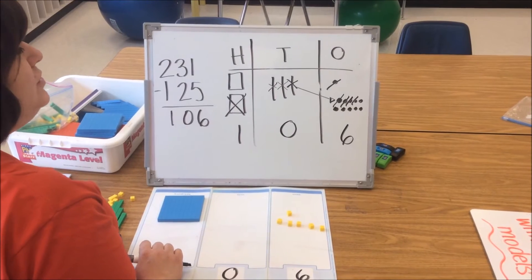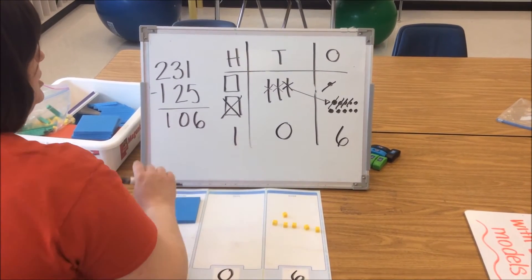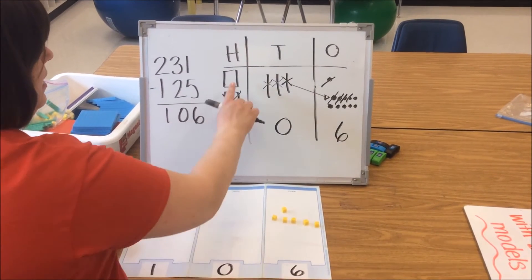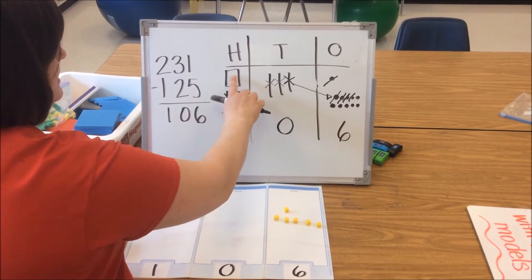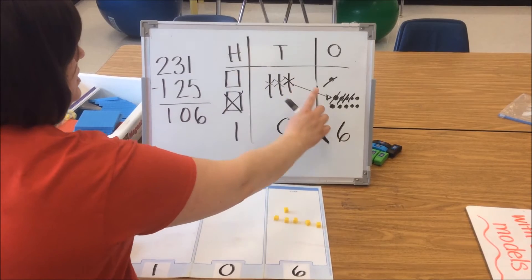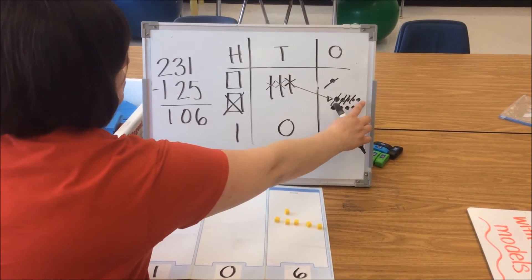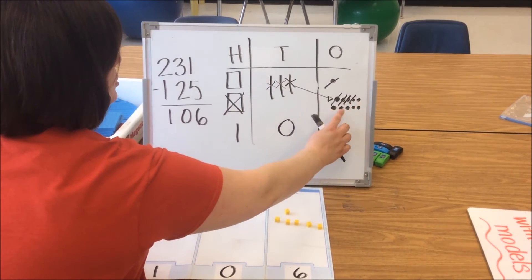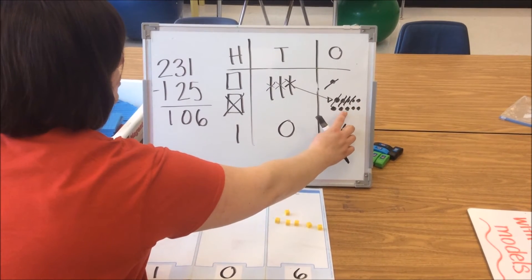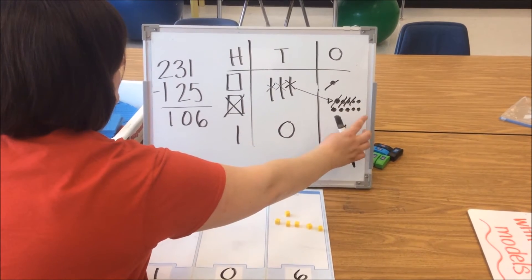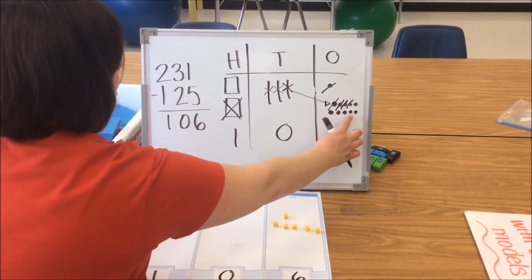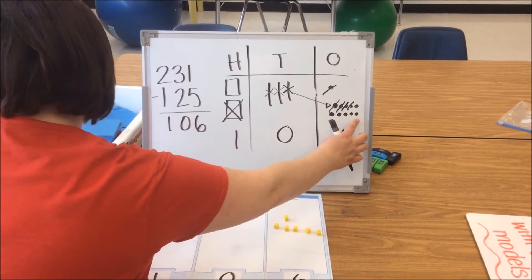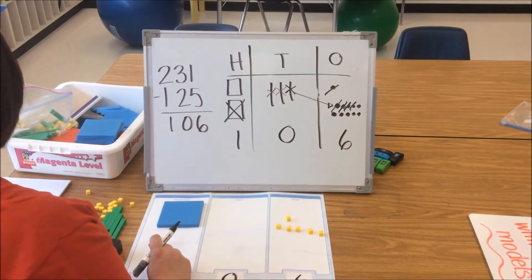A student could count this model to make sure it matches their answer: 100, 101, 102, 103, 104, 105, 106.